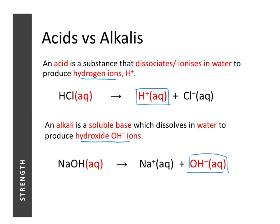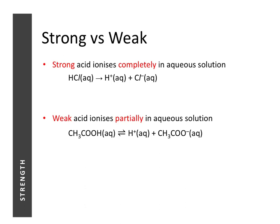A strong acid will ionize completely in aqueous solution, whereas a weak acid will only ionize partially. For example, if we have 100 units of hydrochloric acid, which is a strong acid, it will dissociate completely to give 100 units of hydrogen ions and 100 units of chloride ions — qualifying it as a strong acid.